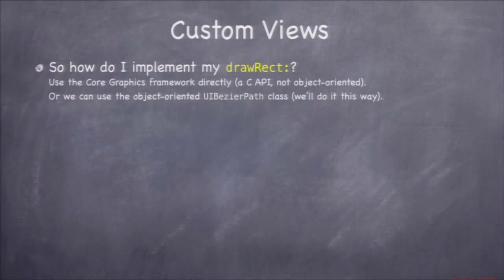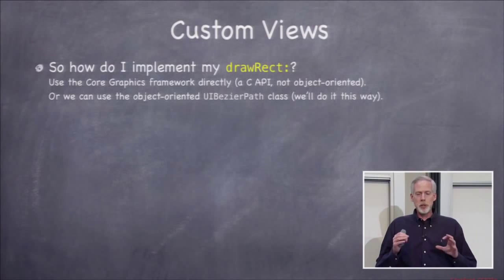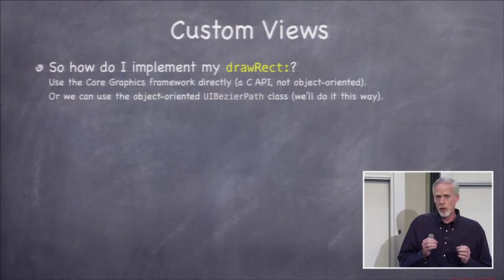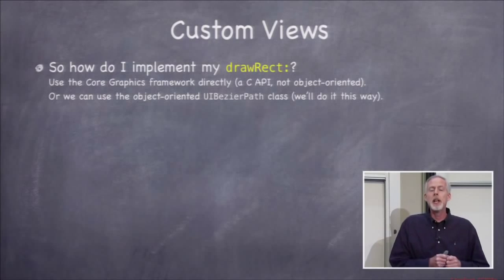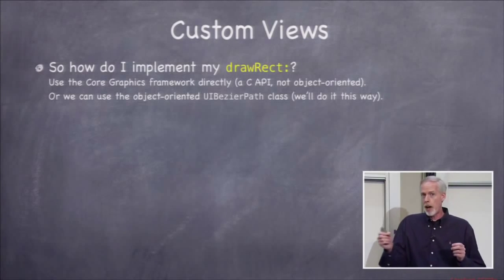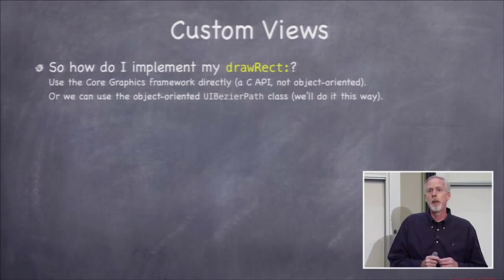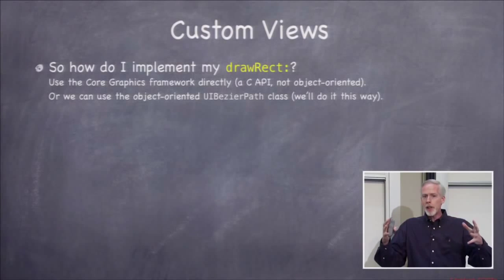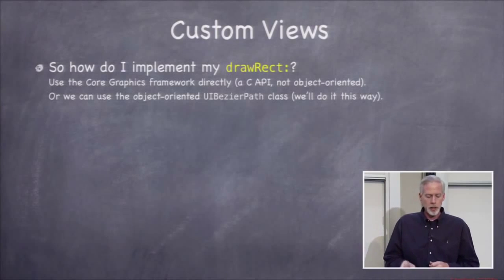So how do you implement drawRect? You use the Quartz library, called Core Graphics. It has a ton of C functions that all start with CG — Core Graphics — and they almost all take a context as the first argument. Alternatively, you can use the UIBezierPath class, which lets you build complicated shapes into a path and then stroke or fill them on screen.